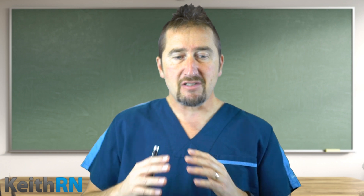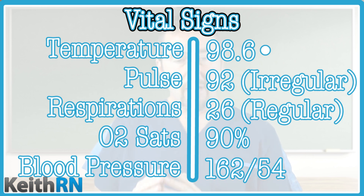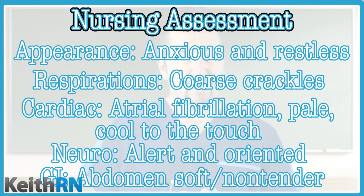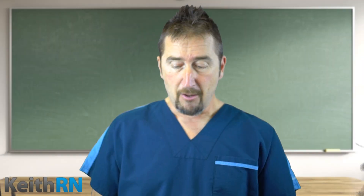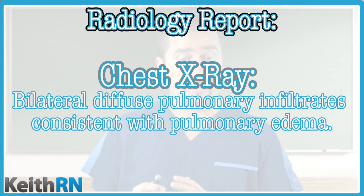As we look at the patient care scenario, it unfolds the same way as in step one, and we're again identifying and highlighting the importance of recognizing relevant data. Vital signs: temperature 98.6, pulse 92, respiratory rate 26, blood pressure 162 over 54, O2 sats 90%. Nursing assessment: patient is anxious and restless; breath sounds have coarse crackles scattered throughout both lung fields; cardiac is in atrial fibrillation; extremities are pale and cool to the touch; pulse is palpable throughout; three-plus pitting edema with an S3 murmur. Neurologically, she's alert and oriented to person, place, time, and situation. Abdomen is soft, non-tender with bowel sounds in all four quadrants. She's voiding without difficulty and skin integrity is intact.